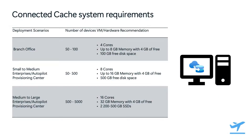Two common questions customers often have are: what hardware specs should I have for my cache host machine, and how many cache nodes should I deploy to my network? It depends on how many enterprise managed devices you want to serve content to. If you're a small branch office with between 50 to 100 devices, then you'll probably want hardware with at least four cores, up to eight gigs of memory with four gigabytes of free memory, 100 gigabytes of free disk space storage, and you'll probably want to deploy one cache node.